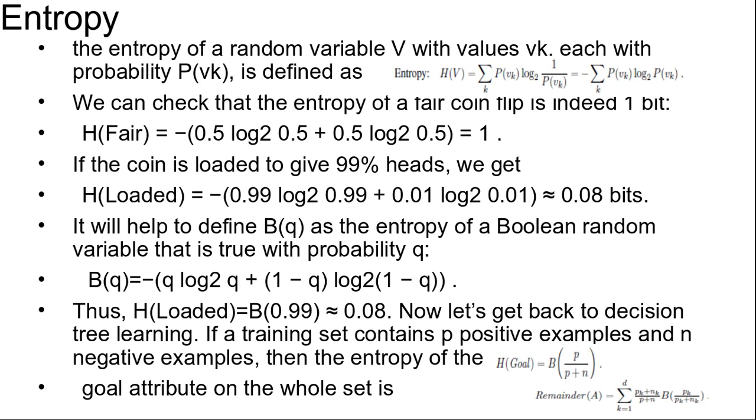If we go along the branch, we will need an additional B(pK/(pK+nK)) bits of information to answer the question. A randomly chosen example from the training set has the kth value for the attribute with probability (pK+nK)/(p+n).